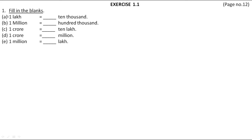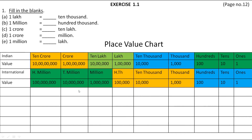In exercise 1.1, the first question is fill in the blanks. They have given us five questions to solve. The first question is: 1 lakh is equal to dash 10,000 — meaning we have to find out how many times 10,000 makes 1 lakh. Let's see the place value chart. As we move from right to left, the value of places increases by 10 times. So, 1 lakh is equal to 10 times 10,000.